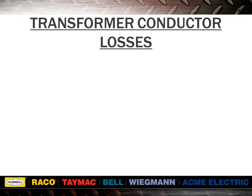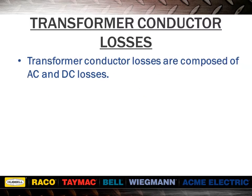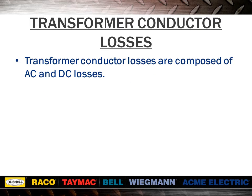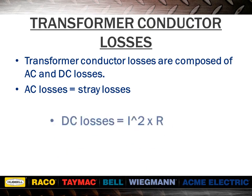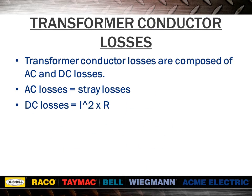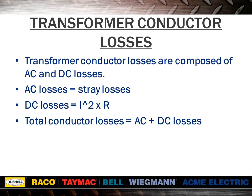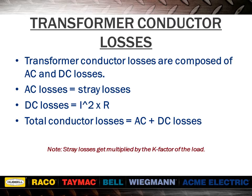Next, we will discuss transformer conductor losses. Transformer conductor losses are composed of AC and DC losses. AC losses equal stray losses; DC losses equal I²R. Total conductor losses equal AC plus DC losses. I²R losses can be easily determined from current and resistance, but stray losses are more difficult. Transformer total losses can be measured by putting a wattmeter in the primary supply circuit; the I²R losses can be subtracted from this total, and the remainder would be the stray losses.